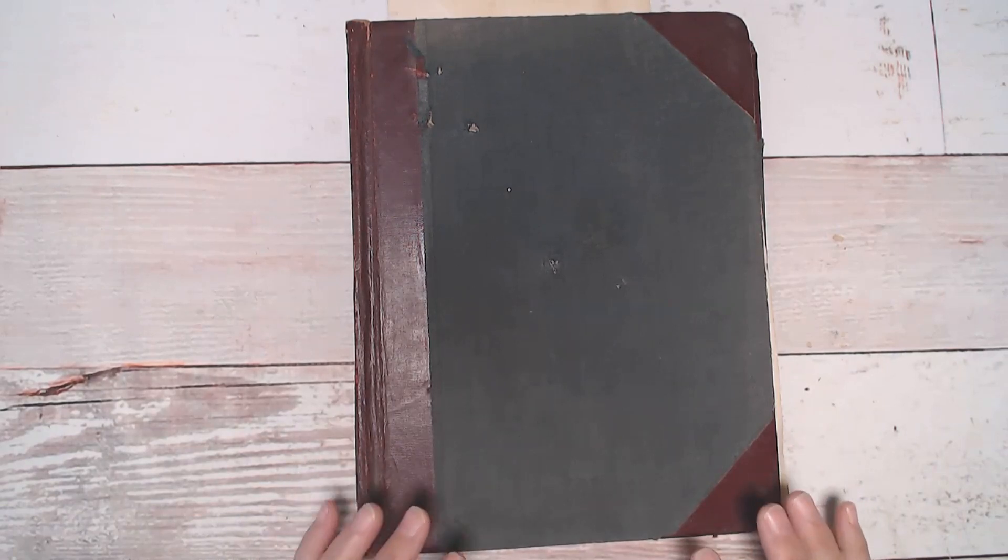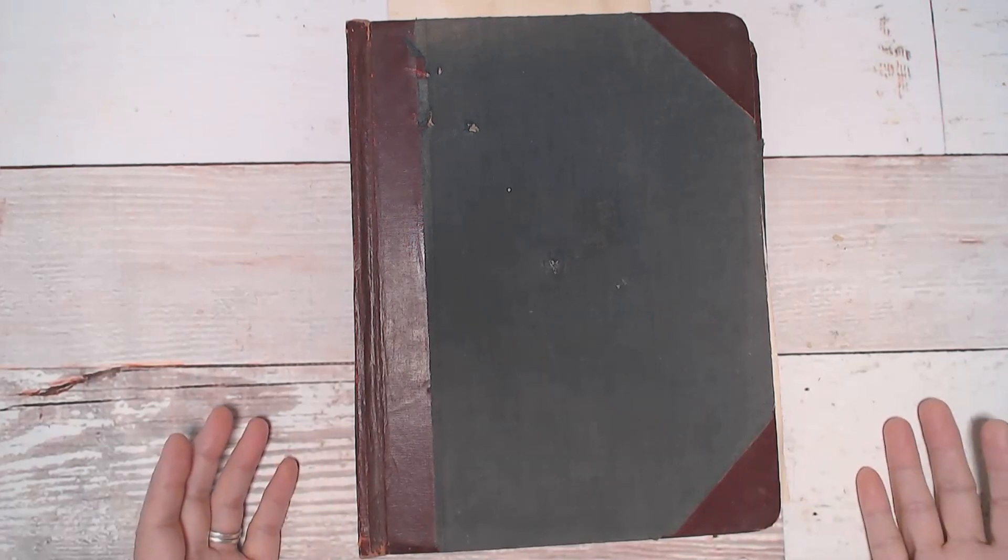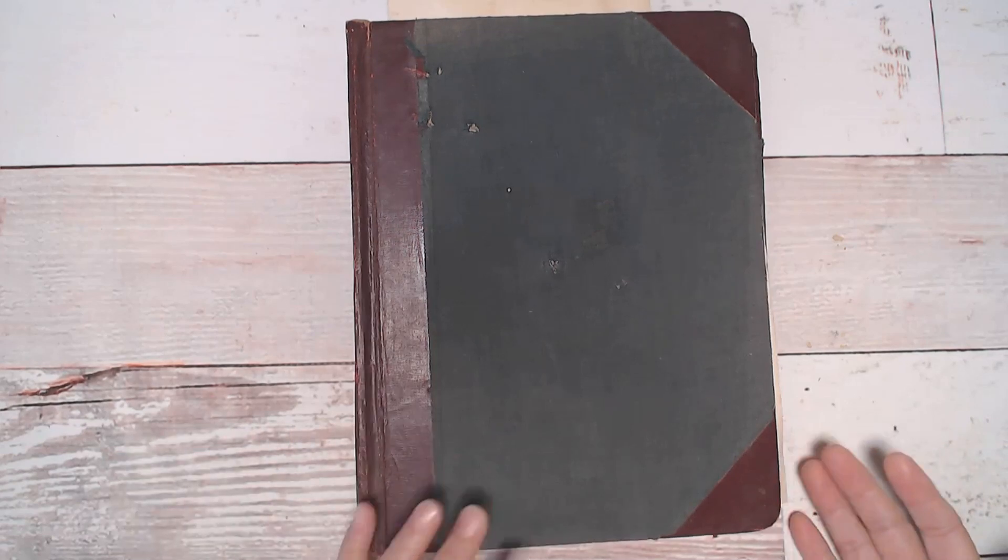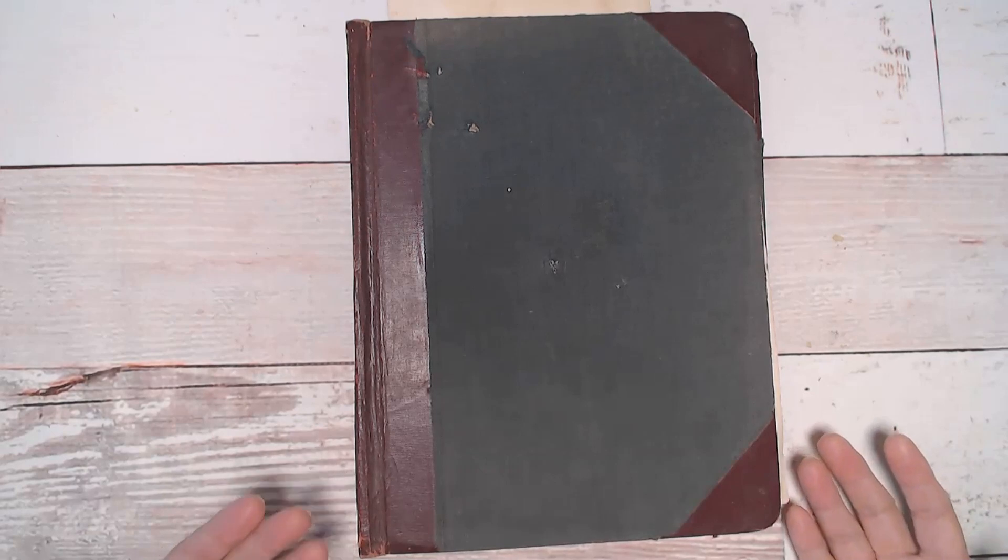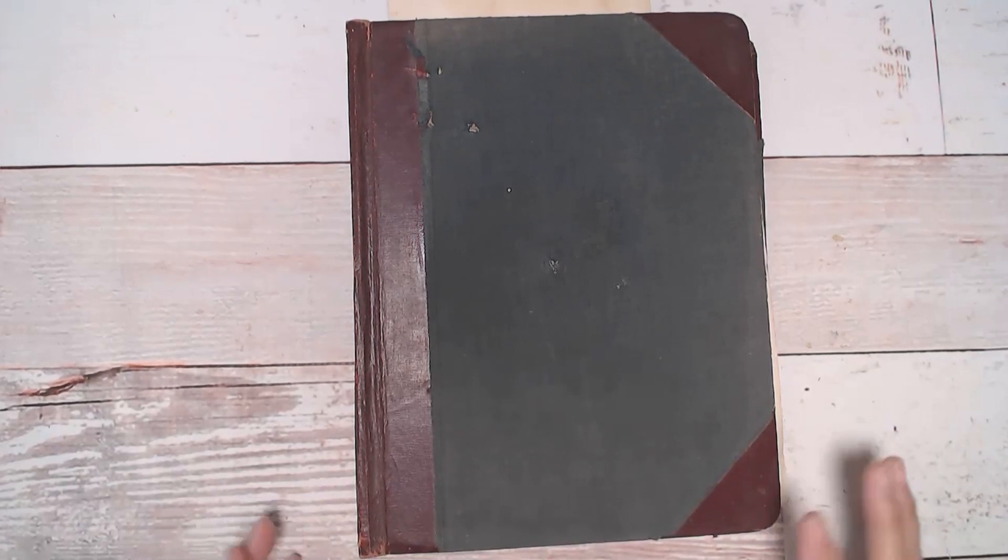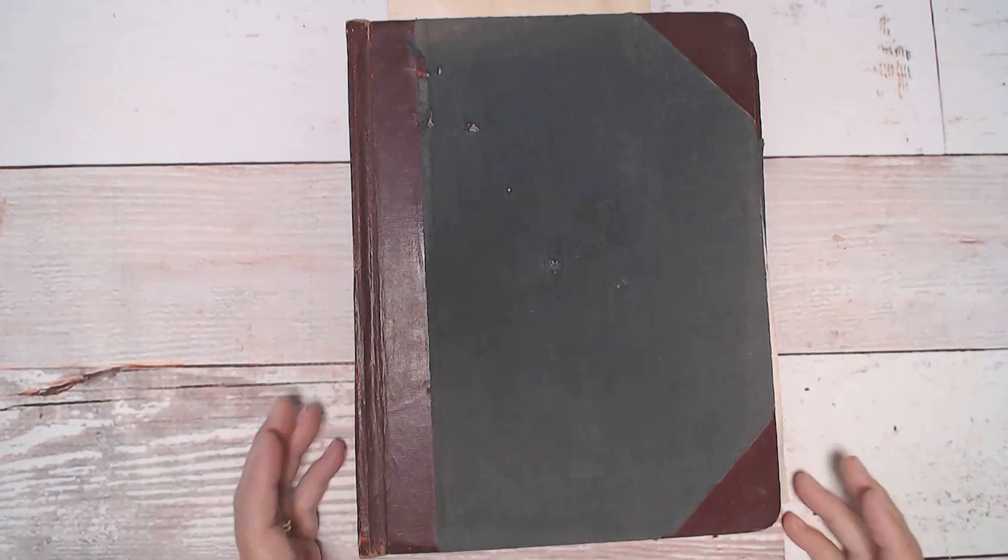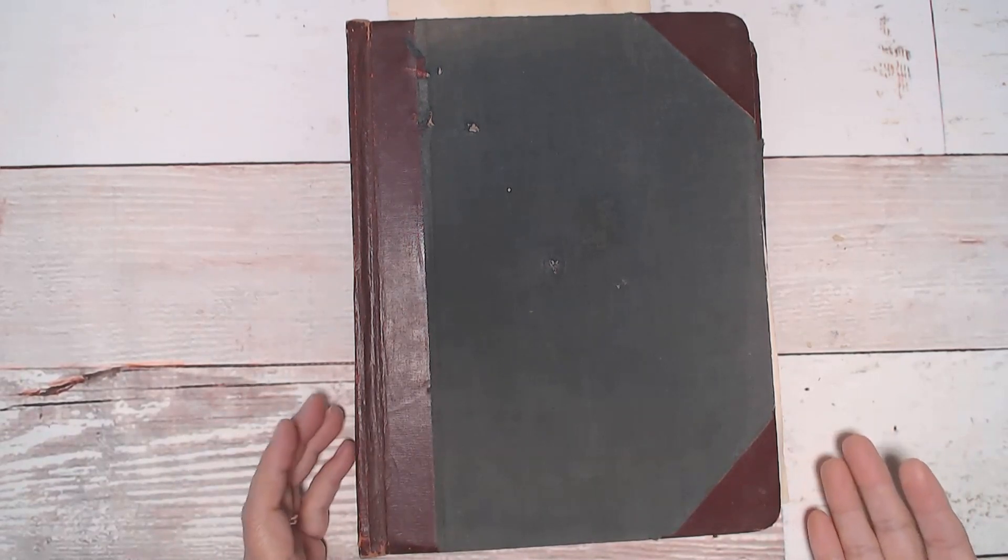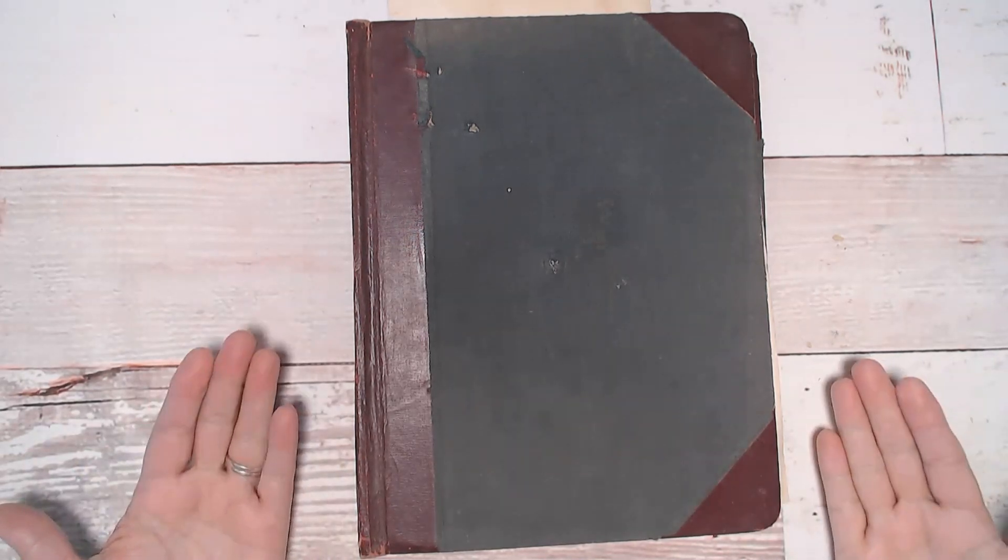Mold and mildew live off of organic materials: leather, paper, cloth, anything like that. Over time it can weaken the structure of the book. You'll see staining on the cover and pages, and it can really have negative effects on your health.